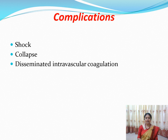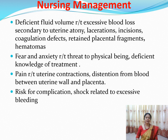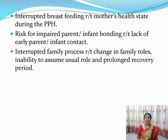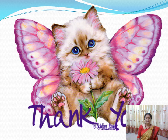Complications of secondary PPH include shock, collapse, and disseminated intravascular coagulation. The nursing management of both primary and secondary PPH begins with formulating nursing diagnoses, which commonly include: deficient fluid volume, fear and anxiety, pain, risk of complications, interrupted breastfeeding, risk for impaired parenting, and interrupted family processes. Nursing interventions should be formulated accordingly.